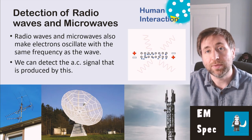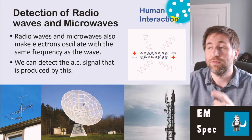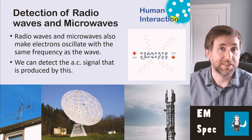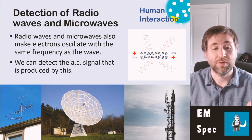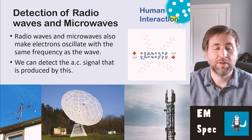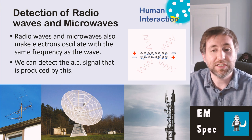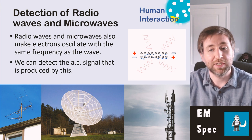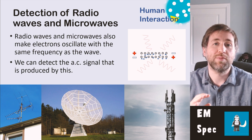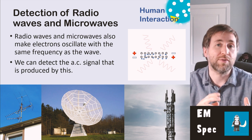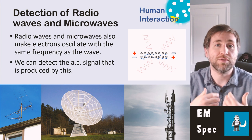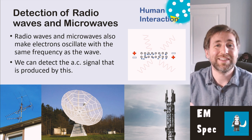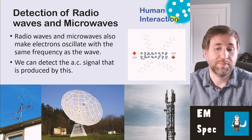Detecting radio waves is the same but opposite — the radio waves cause electrons in a conductor to oscillate at the same frequency as them. An antenna, aerial, or radio wave dish all work by having the radio waves or microwaves cause electrons to oscillate at a particular frequency, producing an AC signal that we can detect.